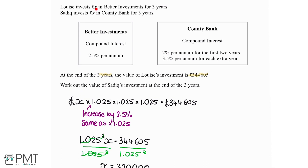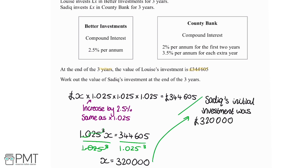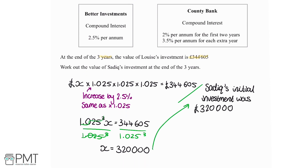So Louise's initial investment amount was £320,000. Because Louise and Sadiq both invested x pounds, Sadiq's initial investment must also be £320,000. Now, different to Louise, Sadiq invested with County Bank. It's still compound interest, so it works in the same way — but his rate was 2% per annum for two years, and then 3.5% per year after that.